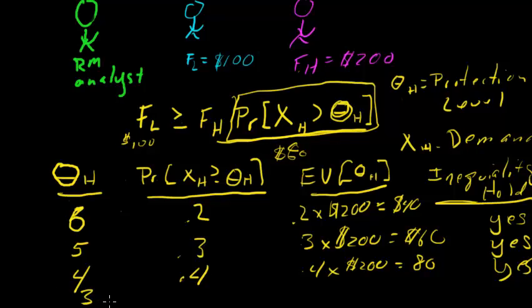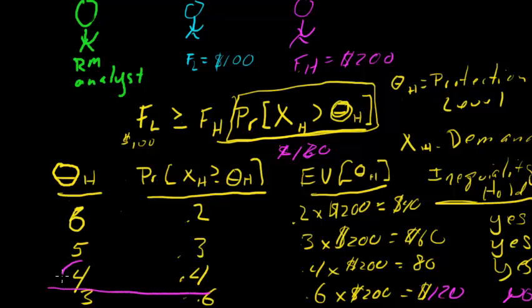And finally, we're going to choose a value. We're going to lower theta to 3. The probability that at least 3 seats are sold in the higher fare class is 0.6. Now we have 0.6 times 200. Our expected value is going to be above 100, 120. And now does the inequality hold? Well, no, it doesn't. No, it doesn't because now we have the expected value on the right-hand side is 120.